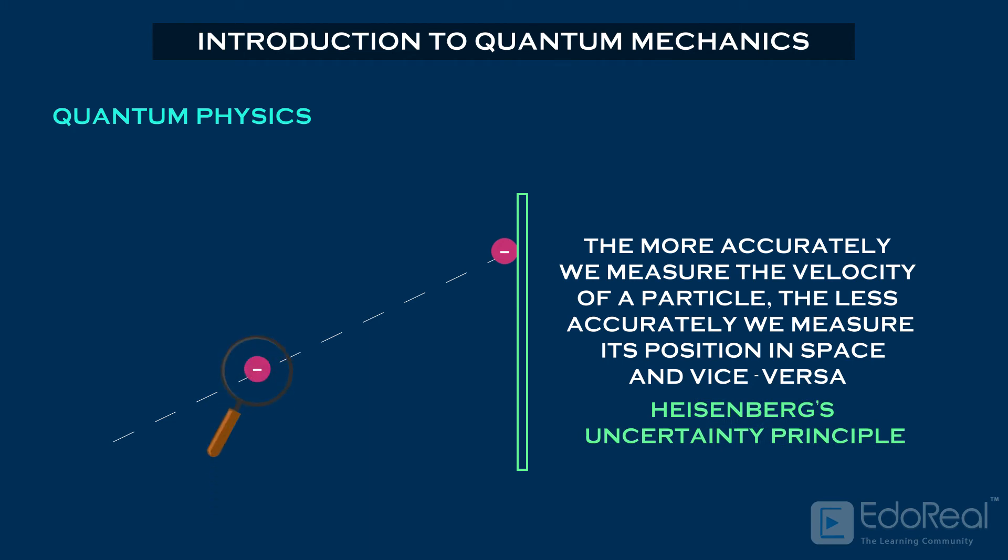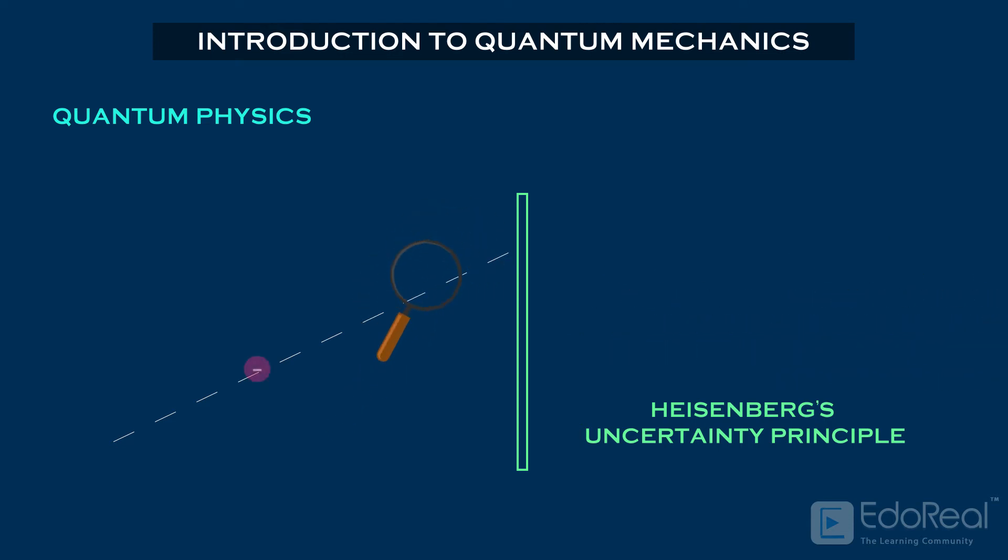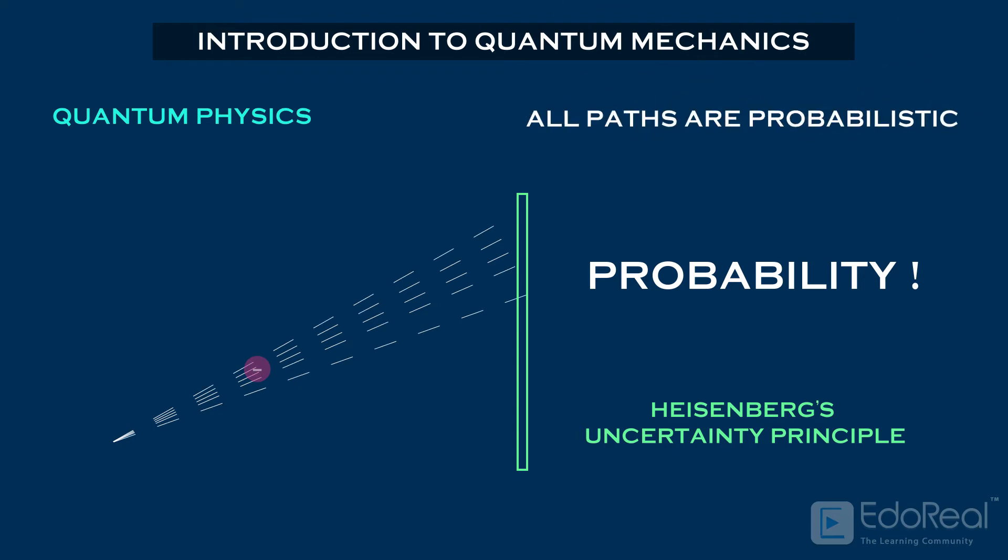And the particle doesn't exist at all until we observe it. That makes absolutely no sense at all. What is going to be the next position of an electron is completely unknown. Here comes the concept of probability. An electron is found at many places at the same time with some probability. This happens because quantum particles don't move in a single deterministic path. All paths are probabilistic.